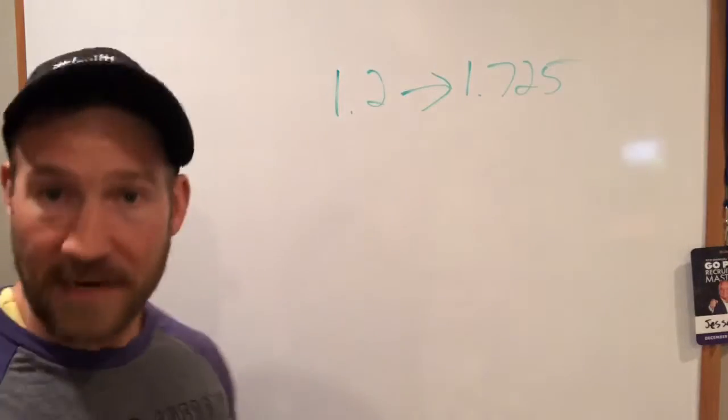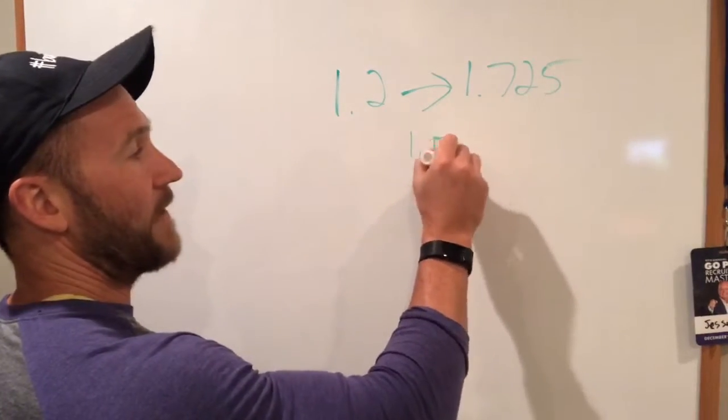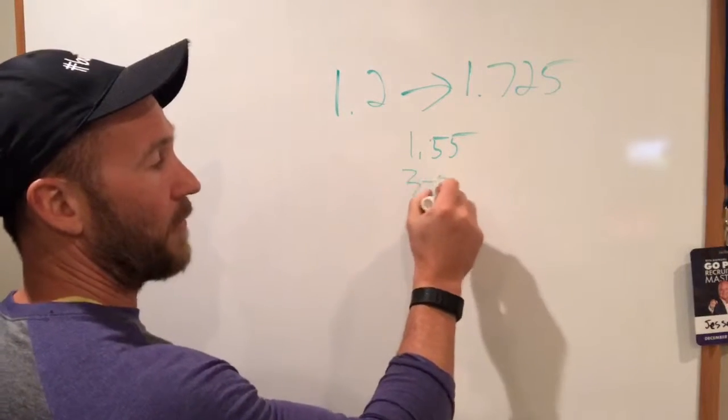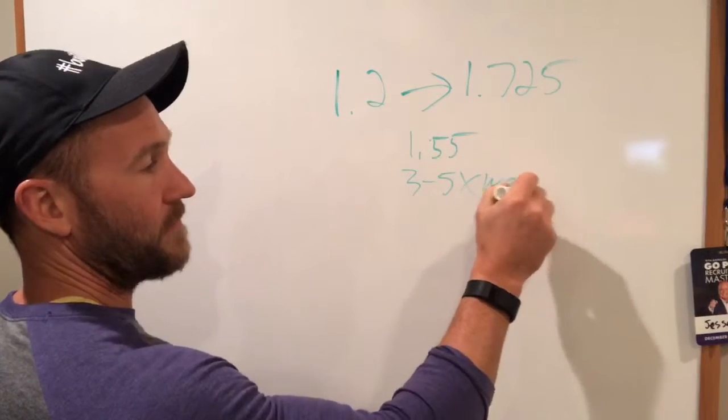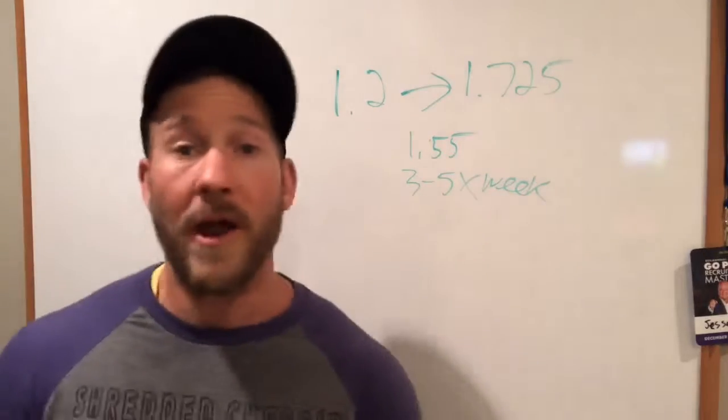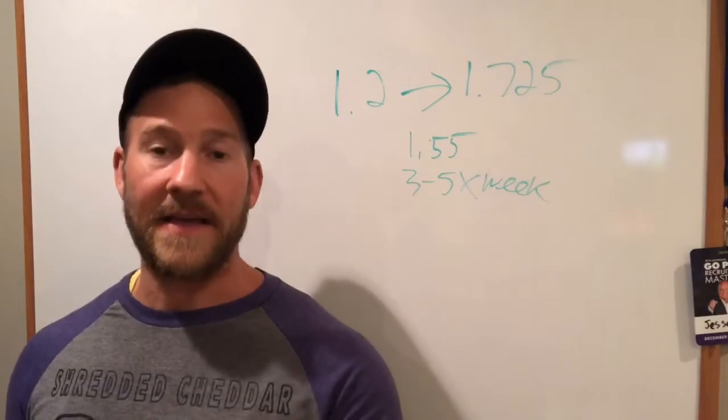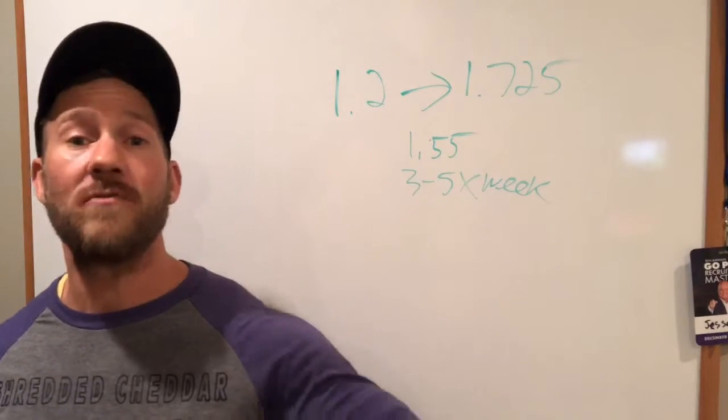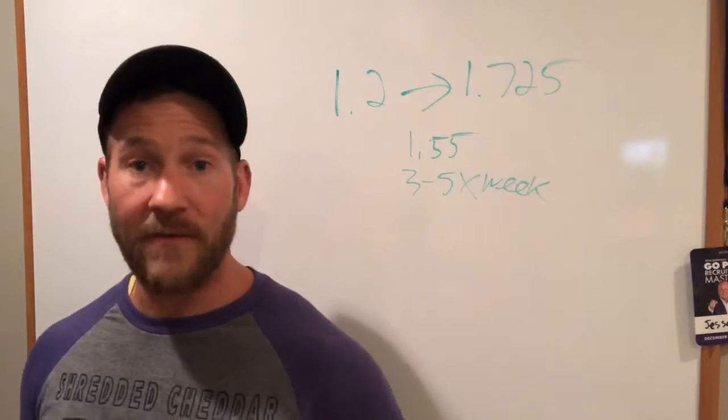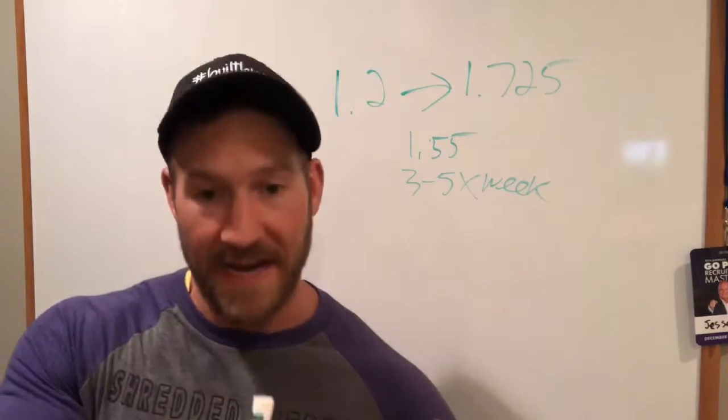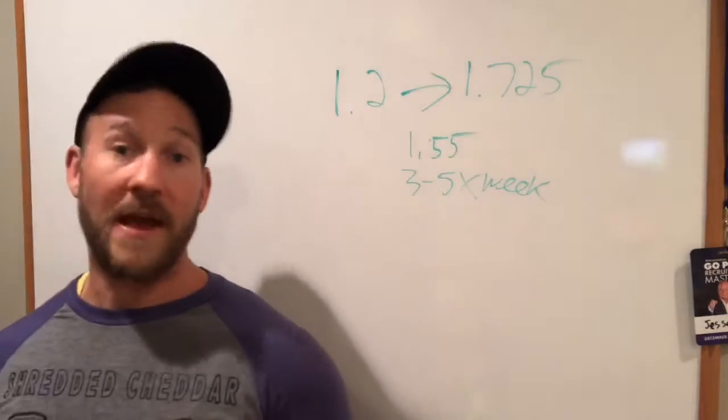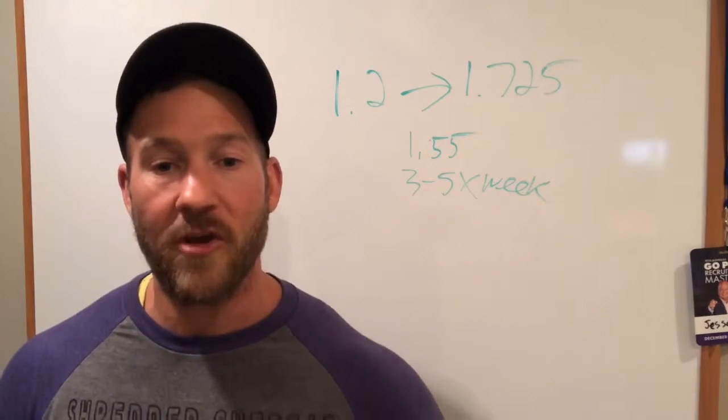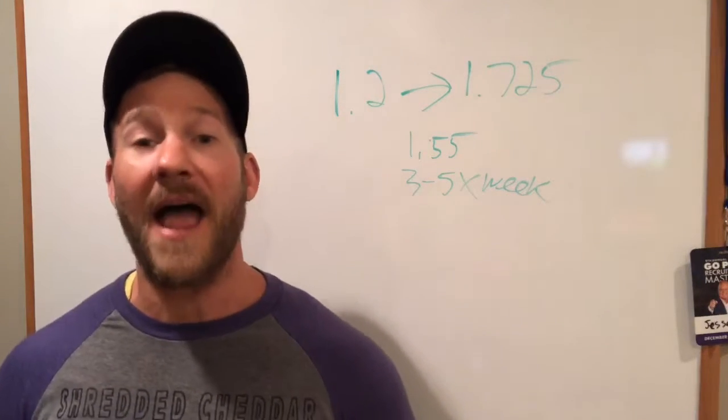Or a common activity level that people will use is 1.55. A lot of your calculators are saying that you work out three to five times a week. So number one, why the online calculators are messing things up is the activity levels. People tend to buy into higher activity levels than those were formulated for.